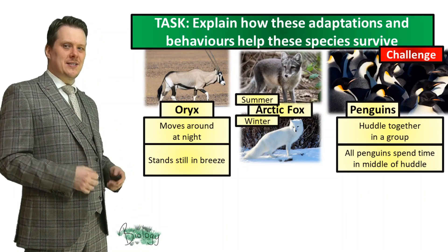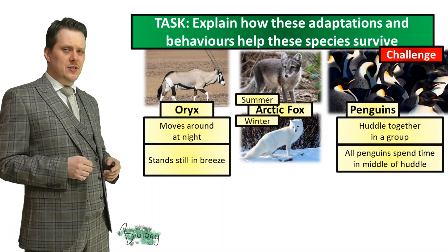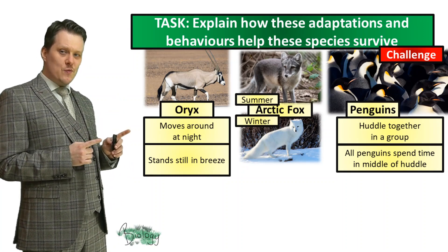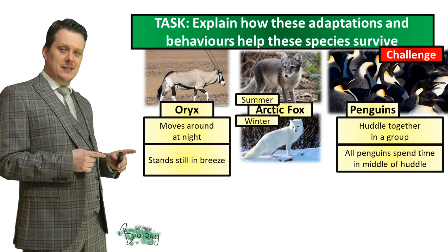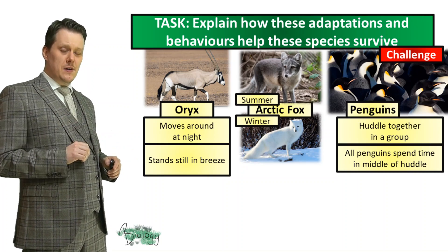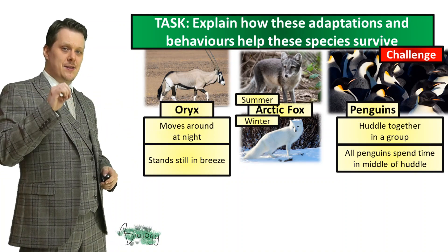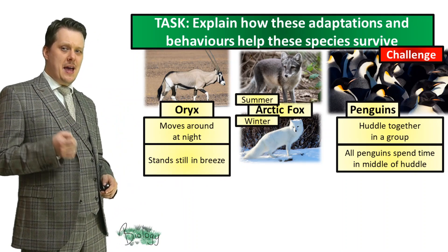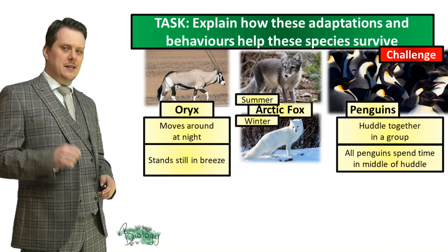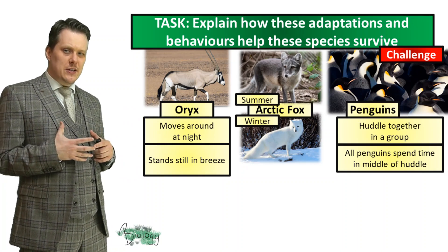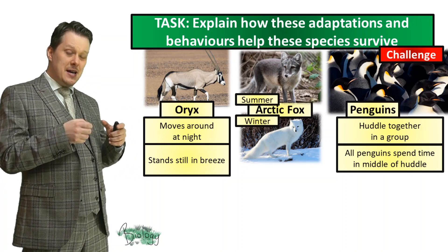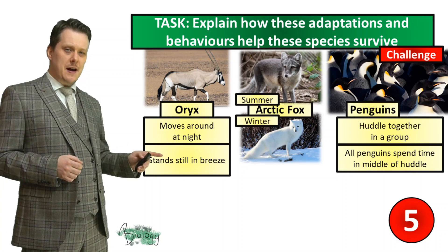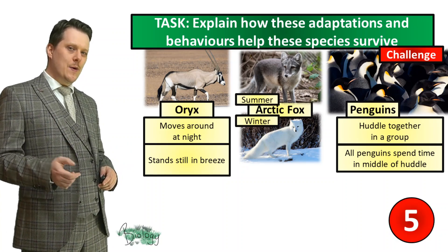For our next task, I'd like you to explain how these adaptations and behaviours help these species to survive. We're going to look at the oryx again — our oryx moves around at night time and stands still in the breeze. Our arctic fox has more visual clues: this is what the arctic fox looks like in the summer, and this is what the arctic fox looks like in the winter. How is that adaptation helping that species to survive? And if you really want a challenge, we've got some penguins — they huddle together in a group, and all penguins get to spend time in the middle of the huddle. How are those behaviours helping those penguins to survive? I'm going to put five seconds on the clock — if you need more time, pause the video, and when you're finished we'll go through the answers together.